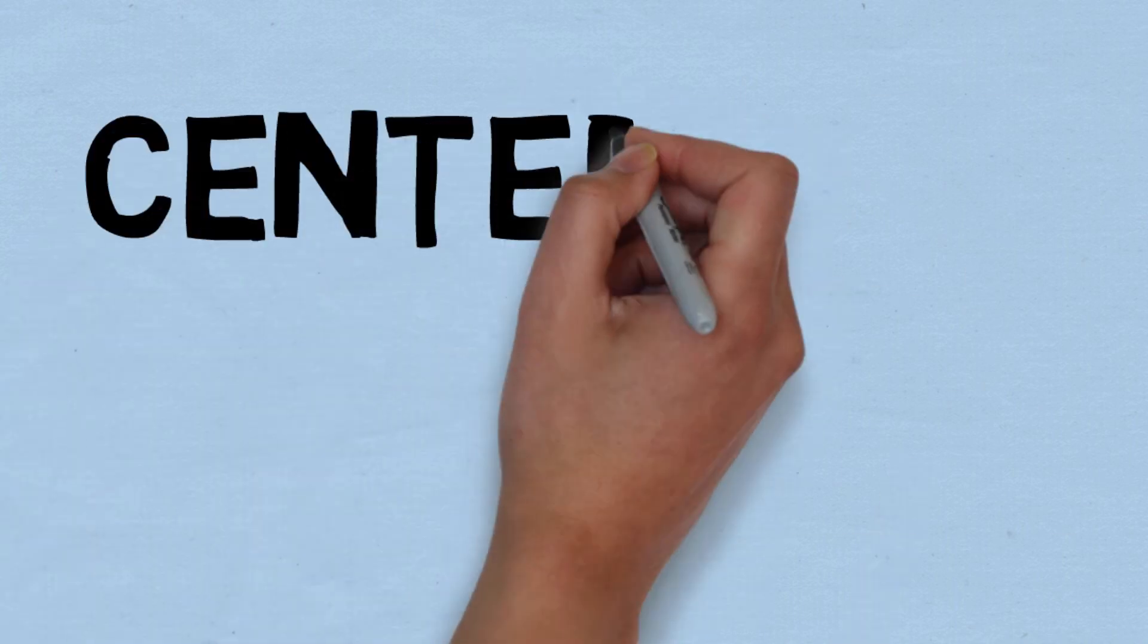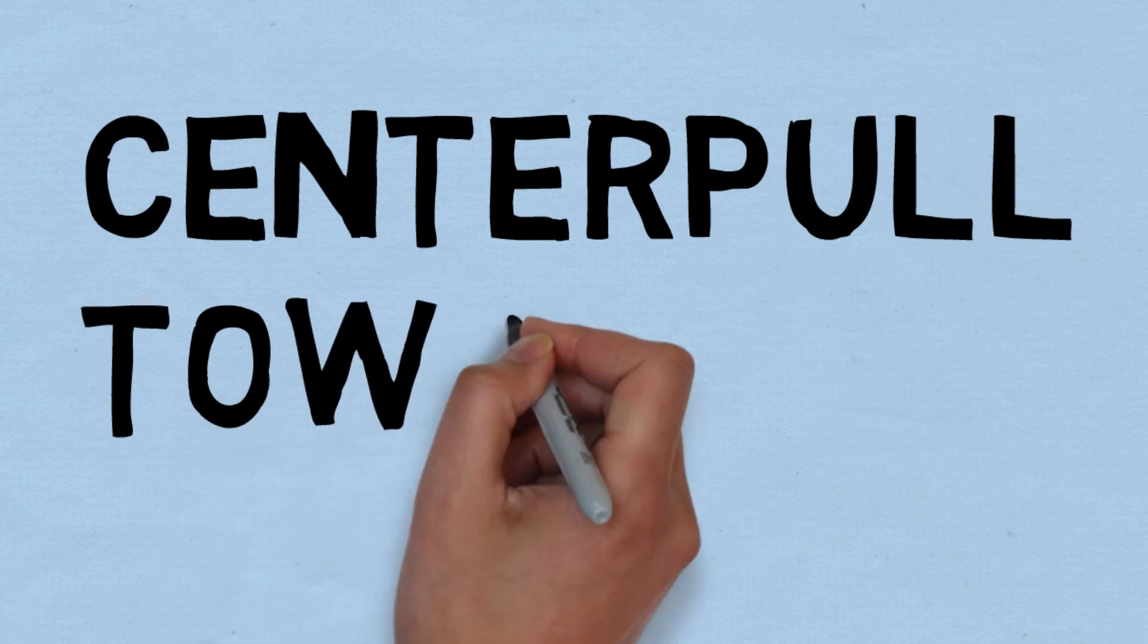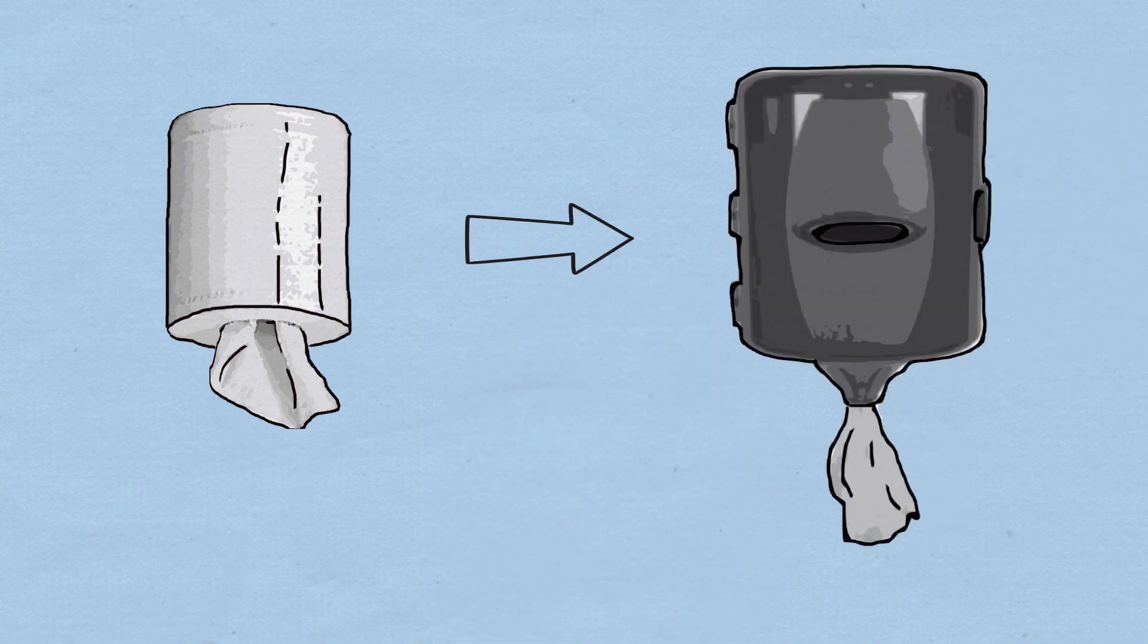Center-pull towels are similar to hardwound towels, but they have a removable cull, which allows you to pull sheets of towel from the center of the roll. These can be used with a hands-free dispenser, which eliminates the need to pull any levers or cranks, preventing cross-contamination.